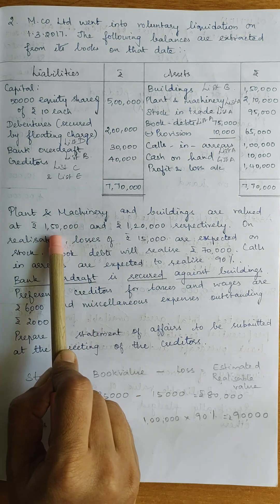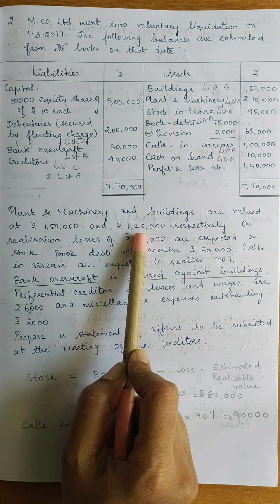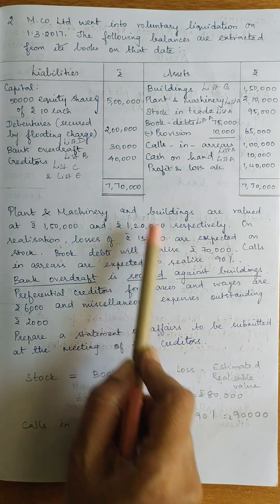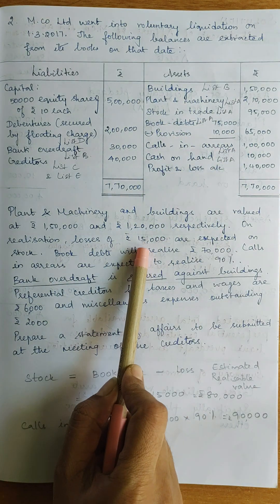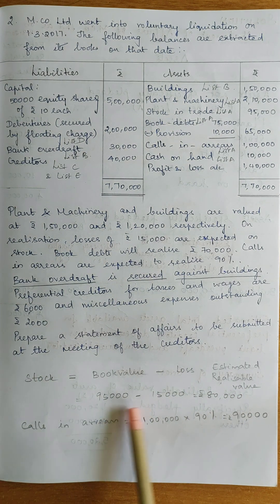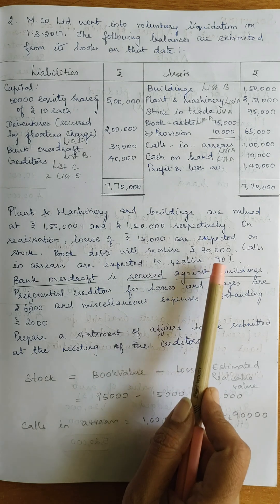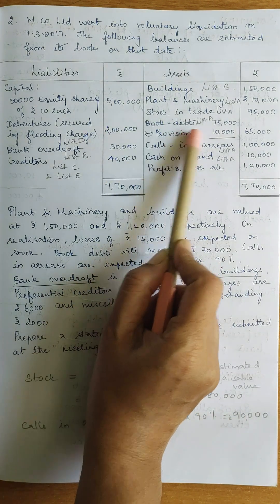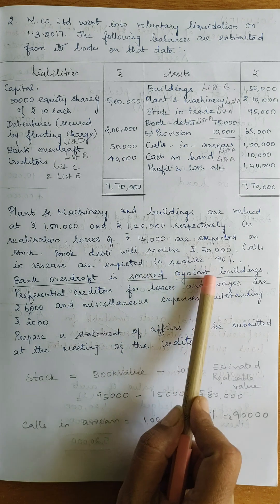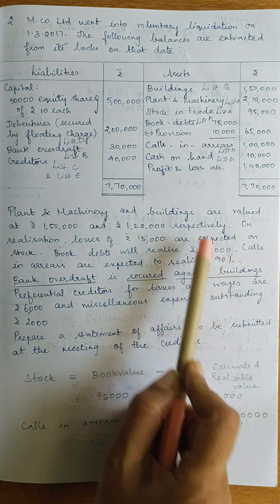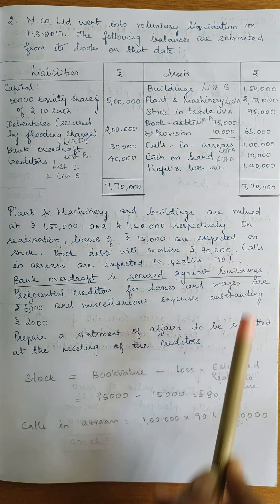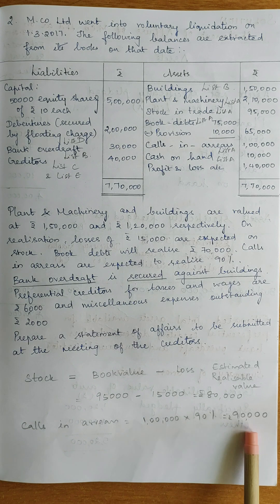Plant and machinery: estimated realizable value Rs. 1,50,000. Buildings: Rs. 1,20,000. Stock book value is Rs. 95,000; with a loss of Rs. 15,000, the estimated realizable value of stock is Rs. 80,000. Book debts will realize Rs. 70,000 (book value was Rs. 75,000). Calls in arrears: the shareholders are expected to pay 90%, so Rs. 1,00,000 × 90% = Rs. 90,000.